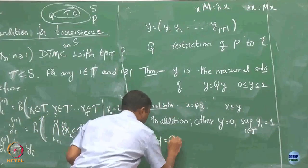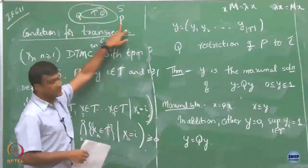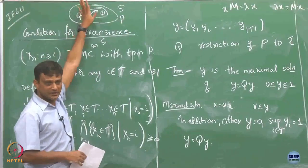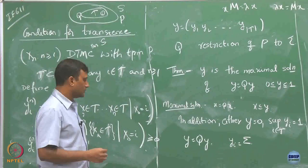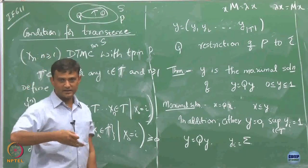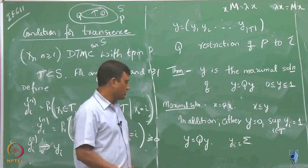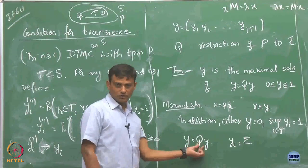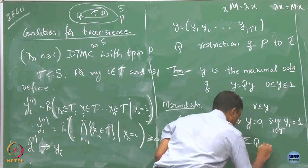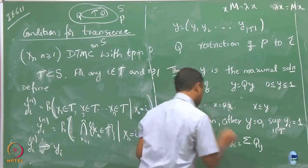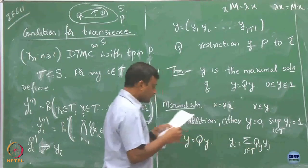Now let us see what Y equals QY is basically telling you. Recall Q is just P restricted to T. If I take a particular i-th component, that is going to multiply the corresponding row of Q with the column vector Y, giving me the sum over j in T of Qij * Yj.